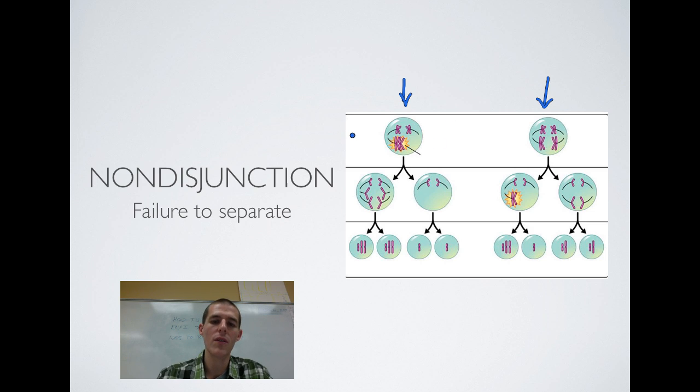If during meiosis one, nondisjunction occurs, you can see that this follows through. And the end result is you have two gametes that are made that are n plus one, meaning that they have got an extra chromosome, and two made that are n minus one, and that they are missing a chromosome. So if nondisjunction happens during meiosis one, the end result is half your gametes being n plus one with an extra chromosome, and half being n minus one missing a chromosome.